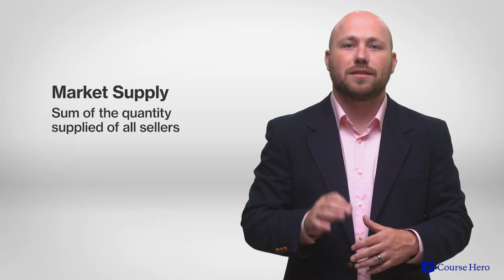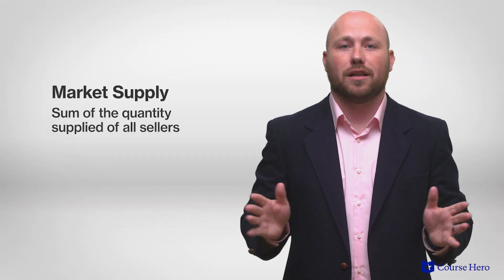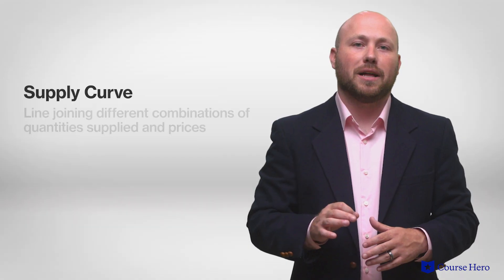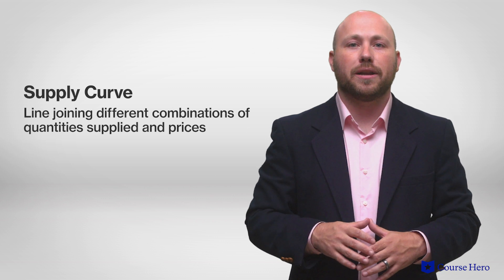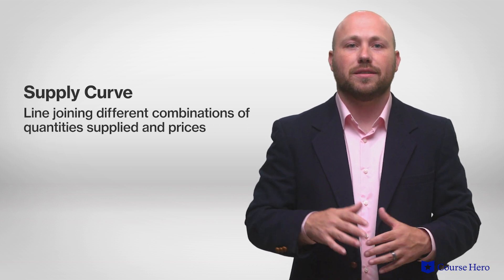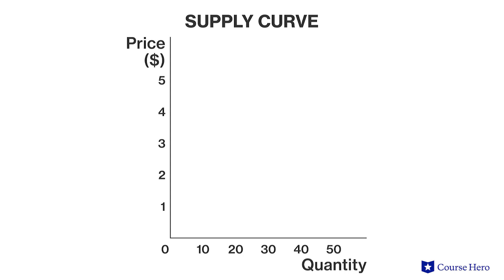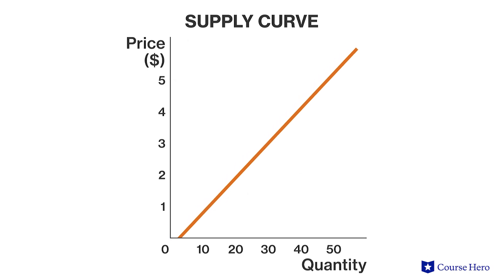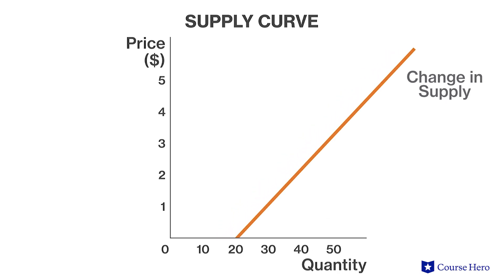Market supply is the sum of the quantity supplied of all sellers. A supply curve is a line joining different combinations of quantity supplied and prices. Price is shown on the vertical axis and the quantity supplied is on the horizontal axis. There is traditionally a positive relationship between price and quantity supplied, thus the supply curve typically has a positive slope. A change in quantity supplied is shown by a movement along the supply curve, while a change in non-price factors will shift the entire curve.